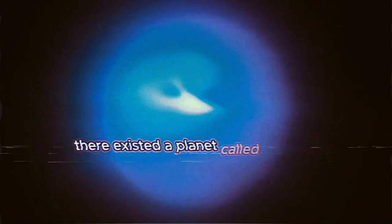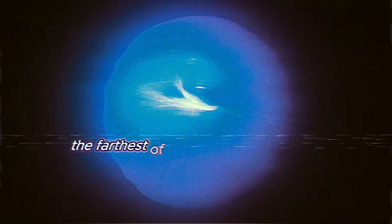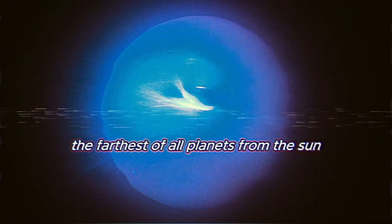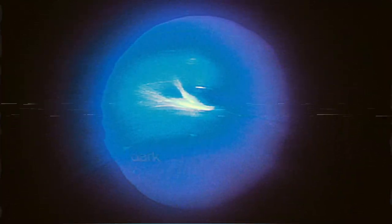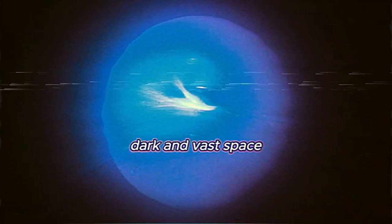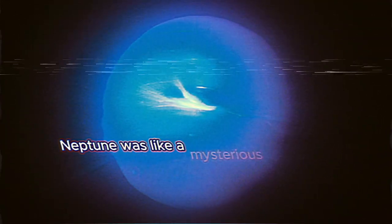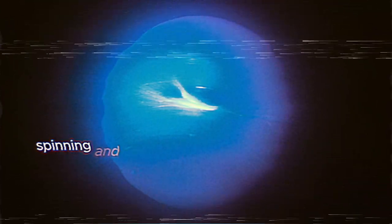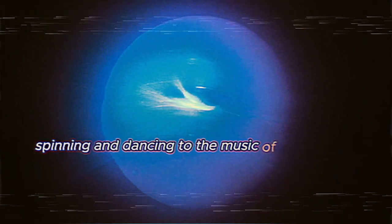There existed a planet called Neptune, the farthest of all planets from the Sun. In the cold, dark, and vast space, Neptune was like a mysterious blue jewel spinning and dancing to the music of the cosmos.